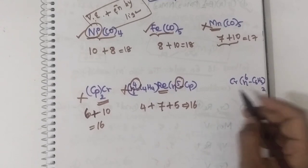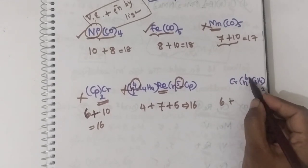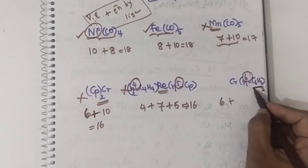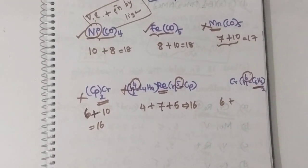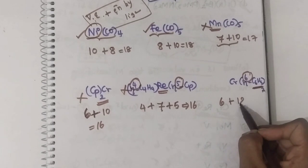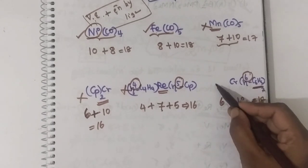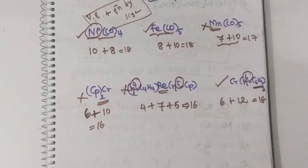Now in the case of chromium with two benzene ligands, Cr(η6-C6H6)2: chromium has 6 valence electrons and benzene is η6, so C6H6 can donate 6 electrons. With two benzene ligands, that is 6 × 2 = 12 electrons. Total: 6 + 12 = 18. It obeys the 18 electron rule, hence this complex is stable.